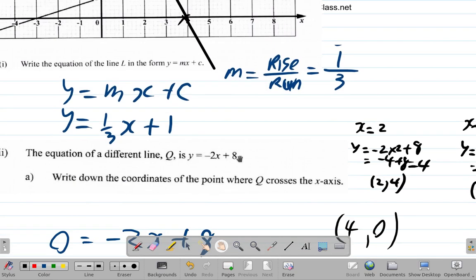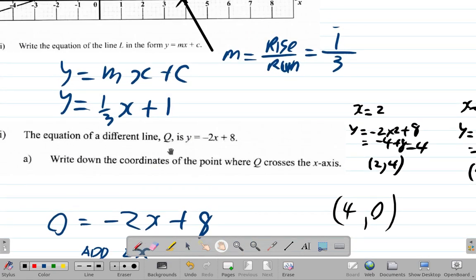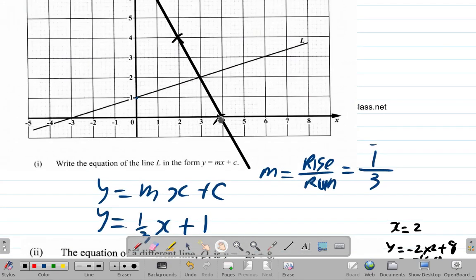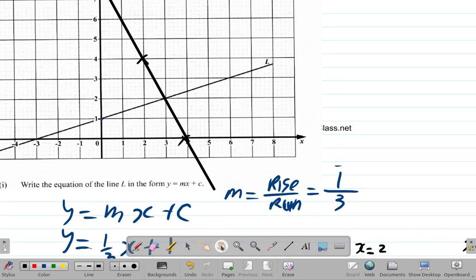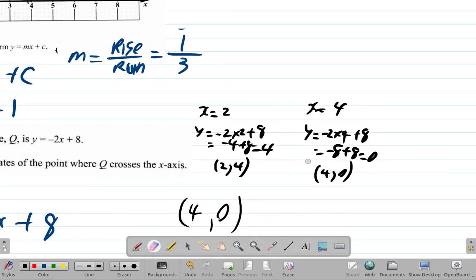Earlier, we said that x is 4 where it crosses the x-axis, and we saw it again when we drew the line.